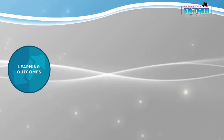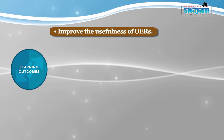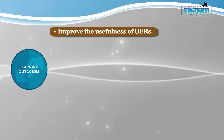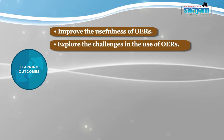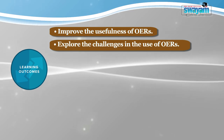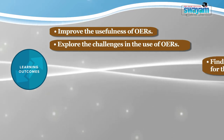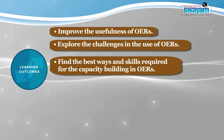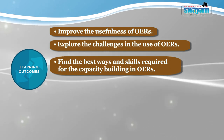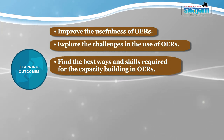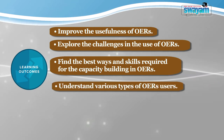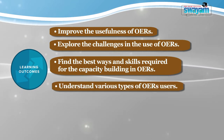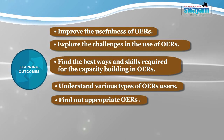Learning outcomes of the present module are: learners will be able to improve the usefulness of open educational resources; they will be able to explore the challenges in the use of open educational resources; they will be able to find out the best ways and skills required for capacity building in use of open educational resources; they will be able to understand various types of open educational resource users; and they will be able to find out the appropriate open educational resources.